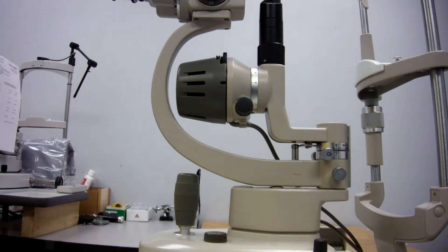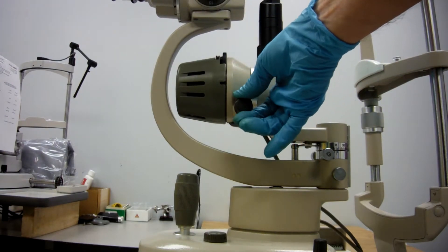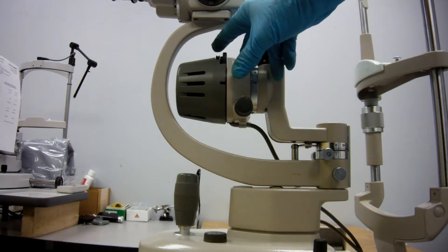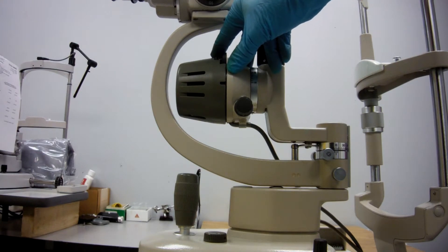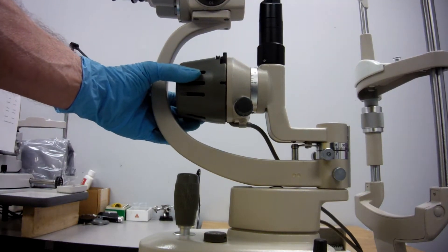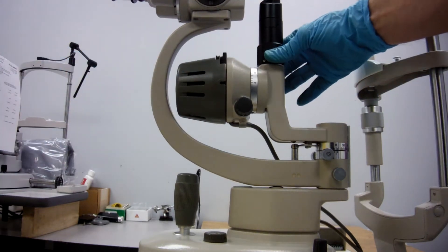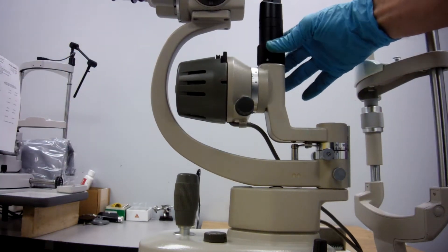This is the G2 Ultra. Some of the common issues are stiff slit control mechanism, stiff diaphragm and filter wheels, a loose body, and a stiff prism rotation.